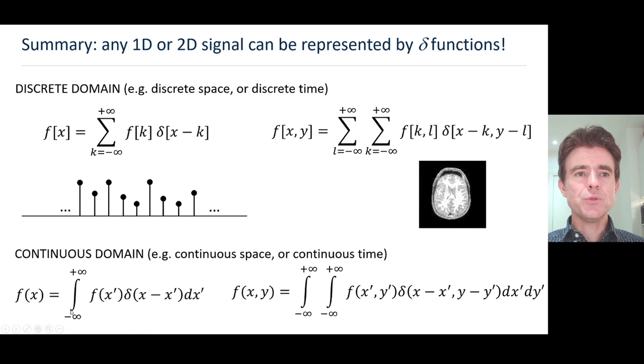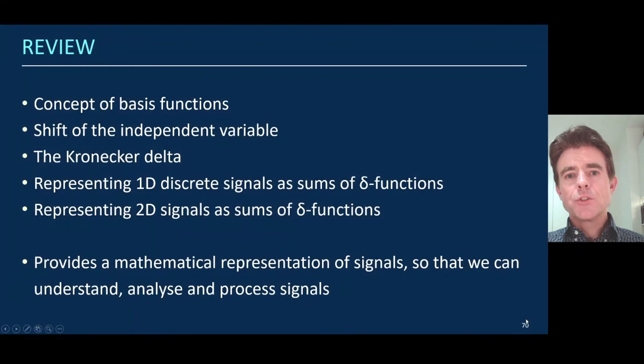Therefore we also have our dx prime, our dummy variable of summation or integration. Look, it's just a weighted delta function shifted to each position that we're considering, x prime. x prime just considers all the values of the function and all the values of the function are used to scale the delta function. Exactly the same logic again in 2D.